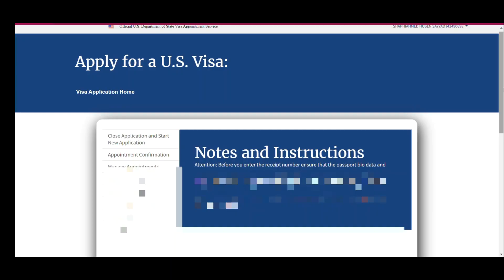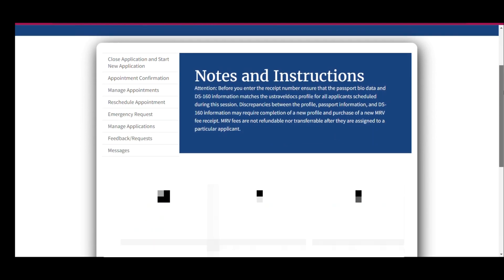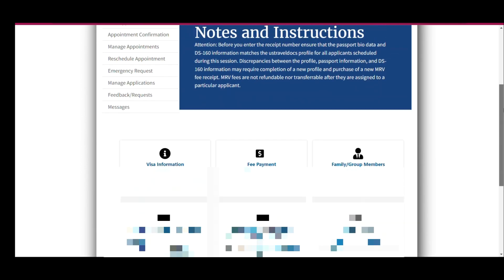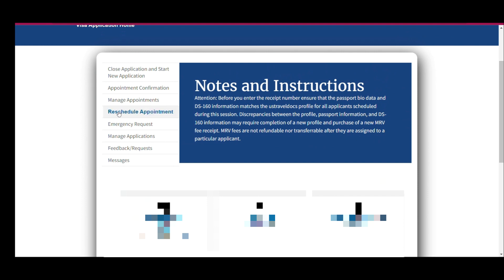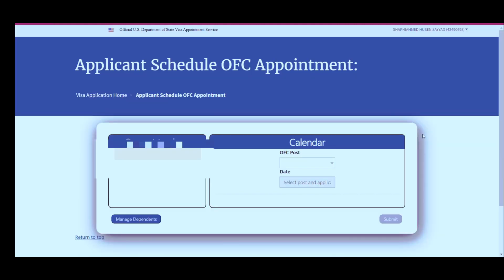If you register with your old email account, all your old details and visa appointment information will appear in this new website portal. When you sign in with your old CGI credentials, the web page looks slightly different from a new applicant's view. You can reschedule an appointment, cancel and make a new appointment, and use various other options. All previously entered details are displayed at the bottom for review and changes.